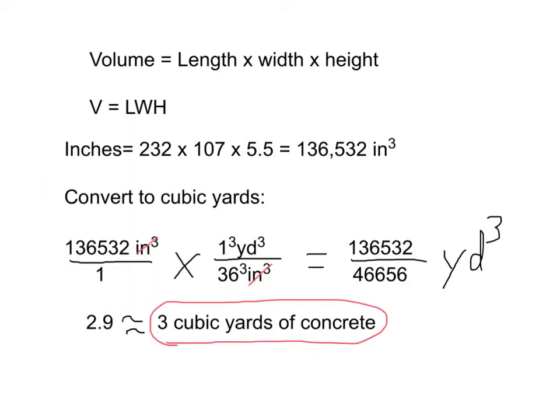Let's start by multiplying in inches. So the length times width times height in inches that I got for my porch is 232 times 107 times 5.5, which equals 136,532 inches cubed.